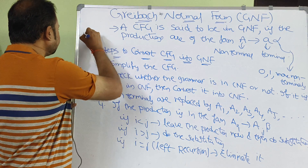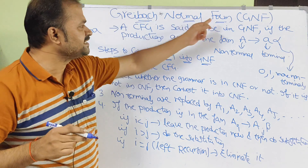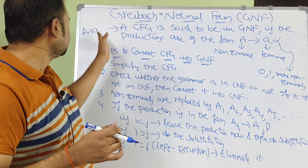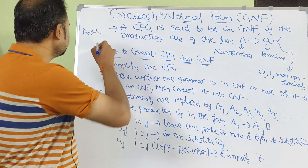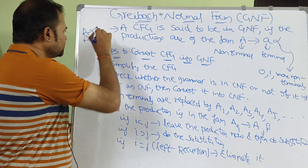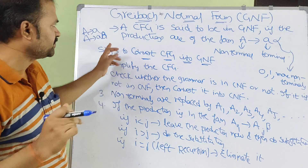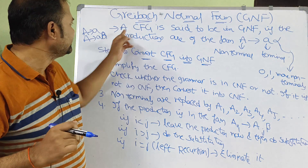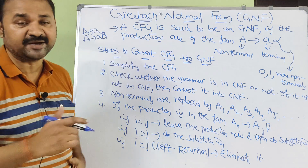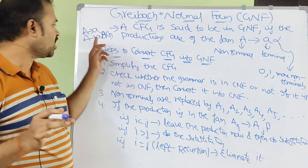For example, A produces small a — this production is in GNF form because it starts with terminal a followed by zero non-terminals. Similarly, A produces small a capital B is also a valid GNF production: a terminal followed by one non-terminal. Likewise, we can have any number of non-terminals after the terminal.